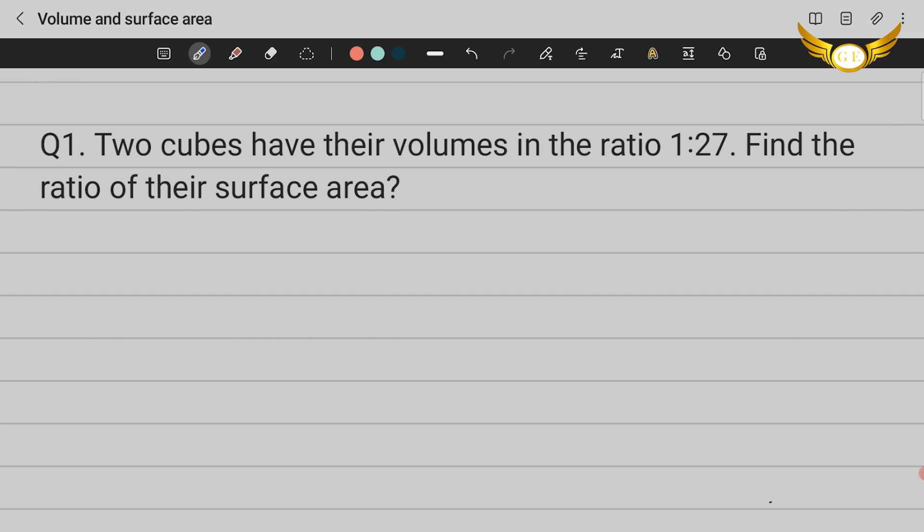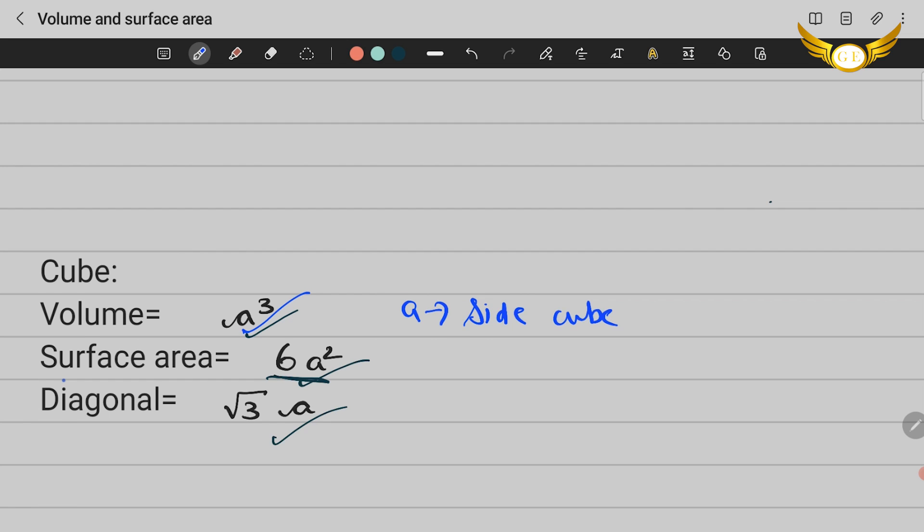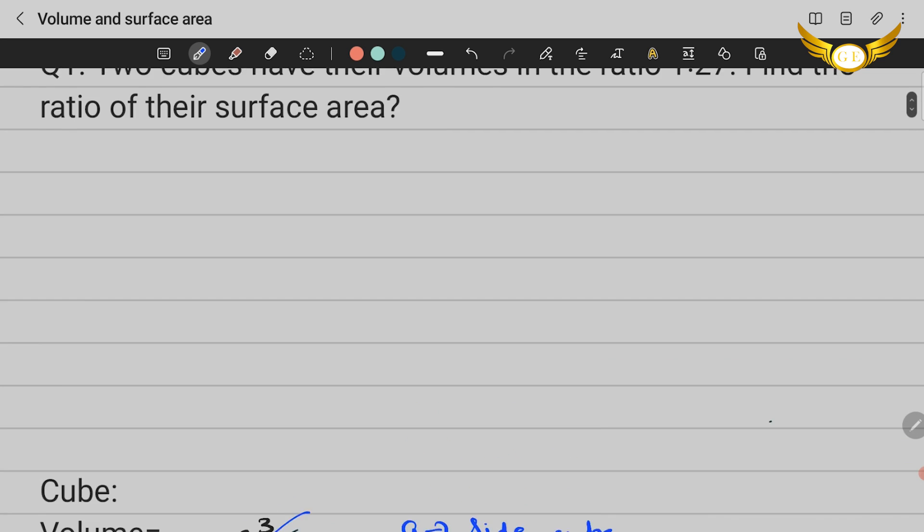If you have already studied cubes and cuboids in your school, you would know that the volume for the cube is a³ and the surface area is 6a², where a is the side of the cube, and diagonal is √3a. So this is your formula for the various things that you could find in the cube.